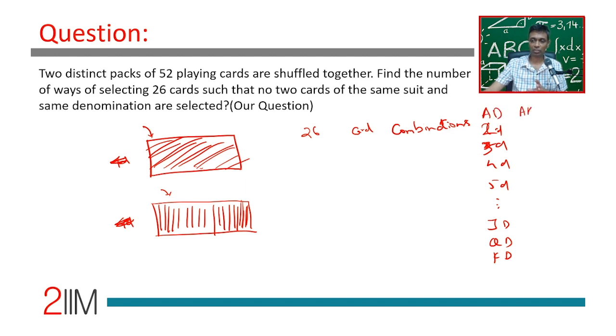Of diamonds. Likewise, ace of hearts, two of hearts, three of hearts, all the way to king of hearts. All 52 combinations are available to us. We're saying, let me select 26 such combinations. That can be done in 52C26.